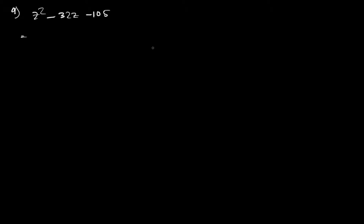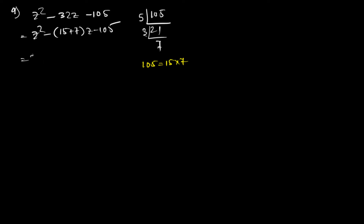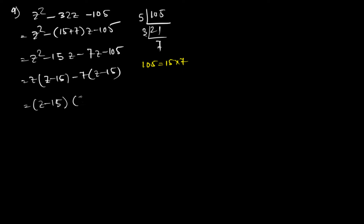Question 9 is z² − 32z + 105. Prime factorization of 105 gives 3, 5, and 7. So 5 × 3 = 15, and 15 + 7 = 22 — wait, actually 15 + 7 = 22, but I need 32: 5 × 7 = 35 — let me re-check. Using 15 and 7: 15 + 7 = 22. So the factors are 15 × 7, giving (z − 15)(z − 7) as the answer.